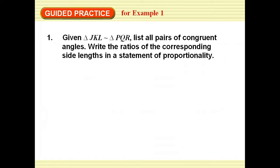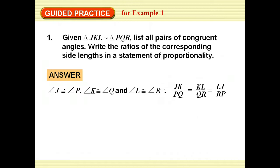Given that triangle JKL is similar to PQR, it wants me to list the congruent angles and write the ratios of the corresponding side lengths in a statement of proportionality. Notice it doesn't give me a drawing. I'm going to have to go from the statement of similarity. My answer is that J corresponds to P, K to Q, and L to R. So those angles are congruent.